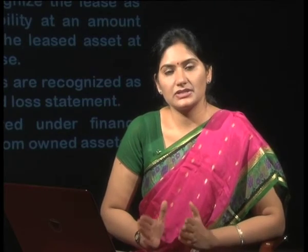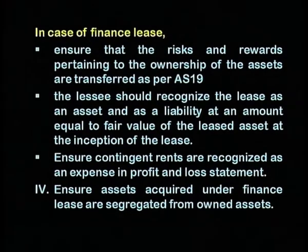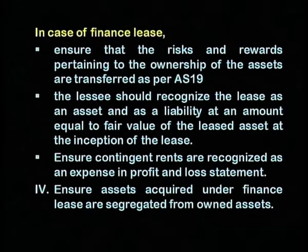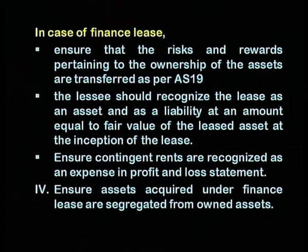In case of a financial lease, in which ownership passes on to the person who has bought the asset on lease, utility shall be maintained and some residual amount of the asset will remain. Ensure that the risks and rewards pertaining to ownership of the assets are transferred as per Accounting Standard 19. The lessee should recognise the lease as an asset and as a liability at an amount equal to the fair value of the leased asset at the inception of the lease. Ensure contingent rents are recognised as an expense in the profit and loss statement. Ensure the assets acquired under finance lease are segregated from the owned assets.